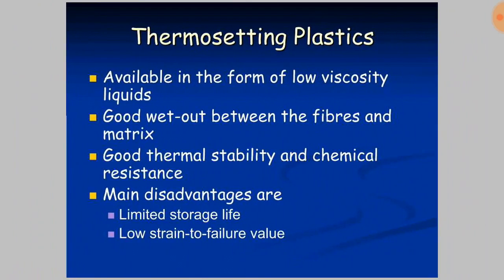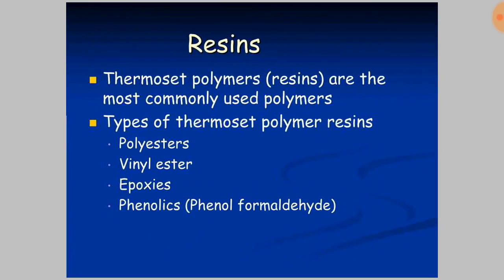Thermosetting plastics are available in the form of low-viscosity liquids, providing good wet-out between fibers and matrix, and good thermal stability and chemical resistance. The main disadvantages are limited storage life and low strain-to-fracture values. The most commonly used thermosetting polymers or resins are polyester, vinyl ester, epoxy, and phenolics (phenol formaldehyde).